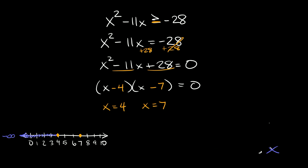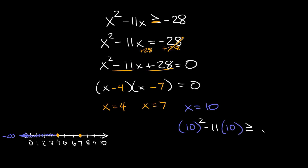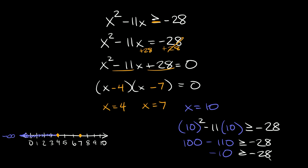The last region to check is to the right. Let's test 10: 10 squared minus 11 times 10 is greater than or equal to negative 28. That gives 100 minus 110, which is negative 10 is greater than or equal to negative 28. That's true — negative 10 is bigger than negative 28. So the entire right region, going toward positive infinity, contains real solutions.